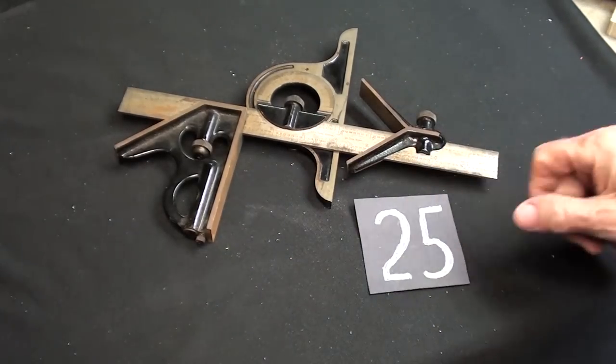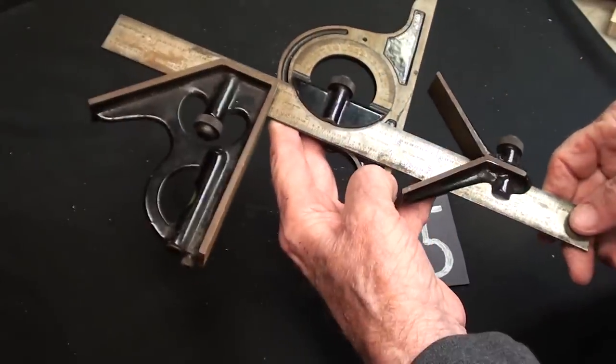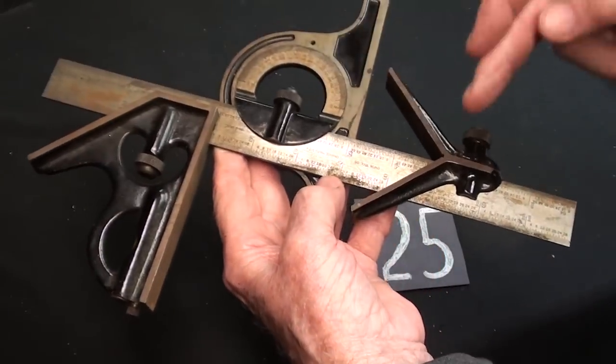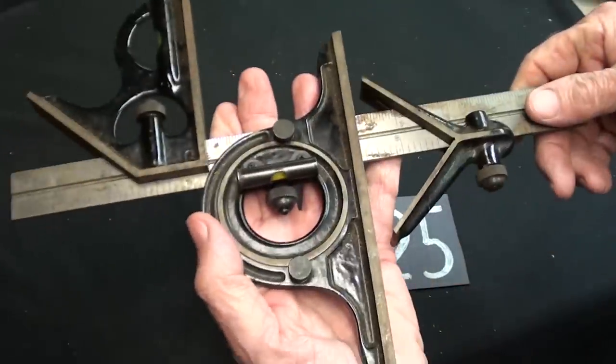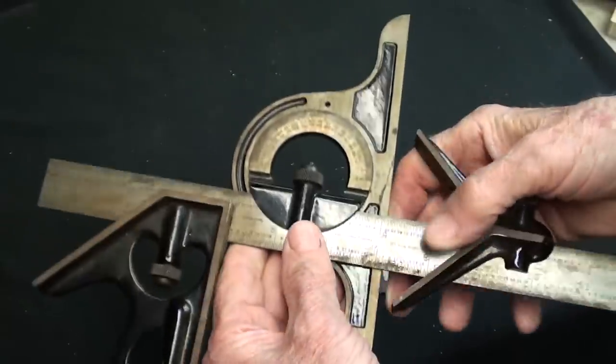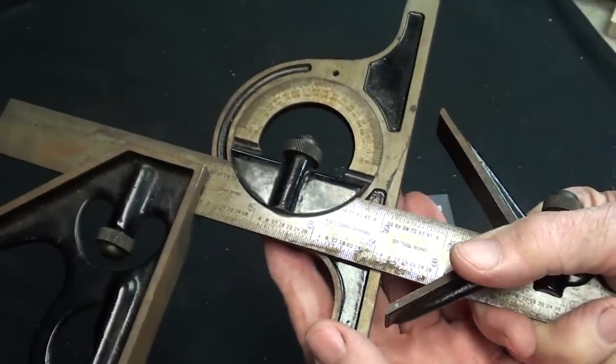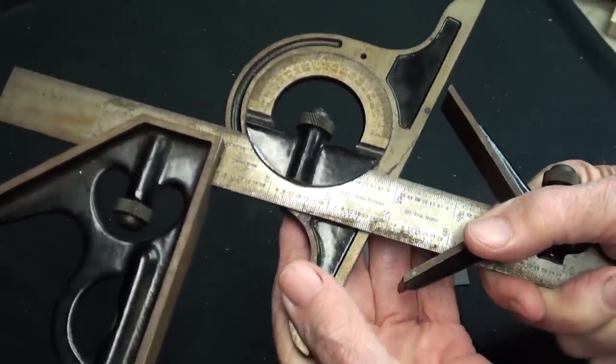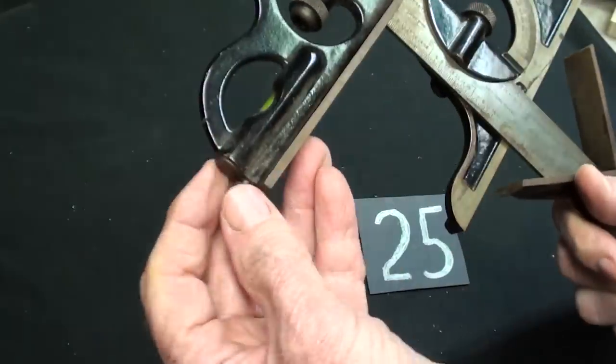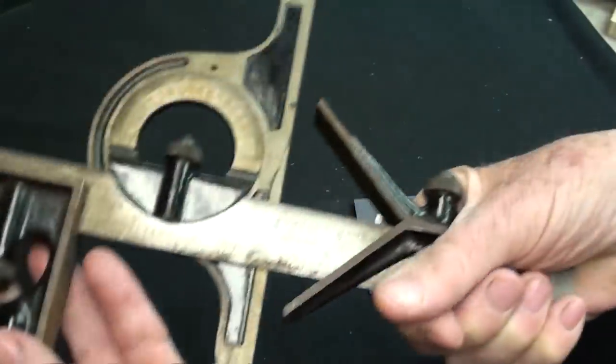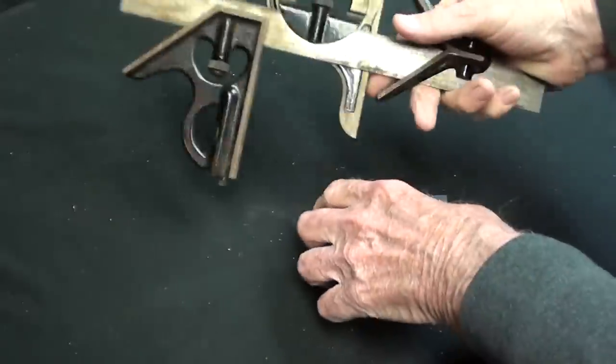Let's start out with item number 25 and it is a Union brand combination square with the head, the protractor and the center finder. Light rust here that needs to be removed with a scotch-brite. You got a good bubble here. The protractor is easy to read. Union were good tools even if you've never heard of them. They've just been out of business that long. Believe it or not still has the scriber. All parts are here. So there is really a nice tool. Number 25.